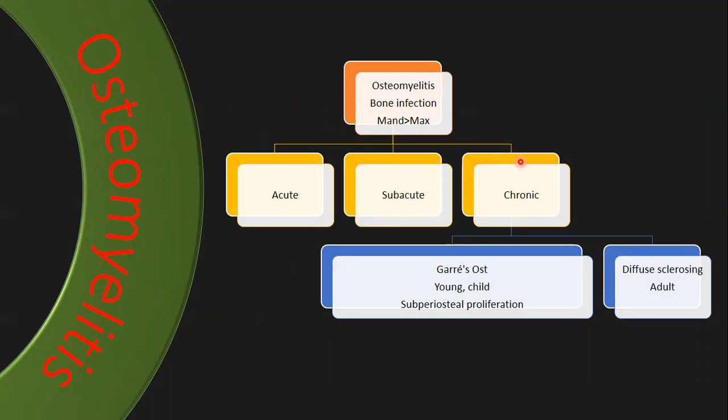The next condition we're going to discuss is osteomyelitis. Briefly, it's a bone infection. It can affect the bone and the soft tissue covering or inside the bone — that includes the periosteum, as well as the blood vessels, nerves, and bone marrow inside. Classification of osteomyelitis: acute, subacute, and chronic. For acute and subacute, there are no radiographical changes — it is only clinical.